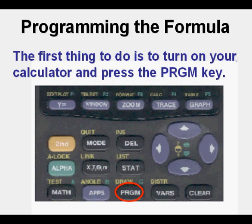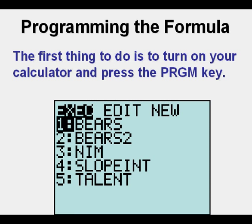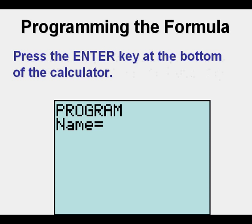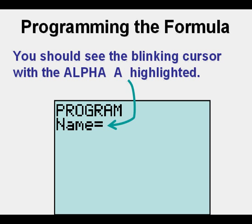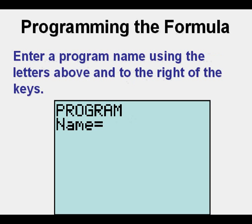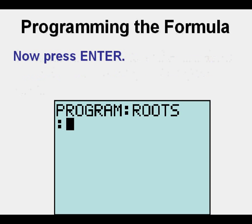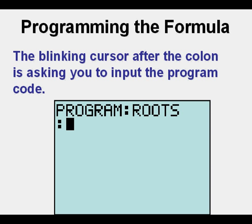Start by pressing the program key, PRGM. You may have a list of programs here already or have no programs installed on the calculator. Arrow twice to the right to get to the New menu. Press the Enter key. You should see the blinking cursor with the Alpha A highlighted. Enter a program name using the letters above and to the right of the keys — it has to be 8 characters or fewer. 'Roots' might be a good name. Press Enter. The blinking cursor after the colon is inviting you to start inputting the program code.